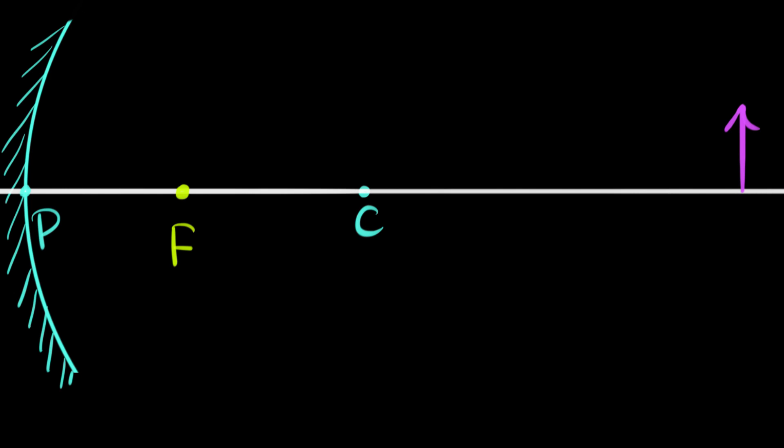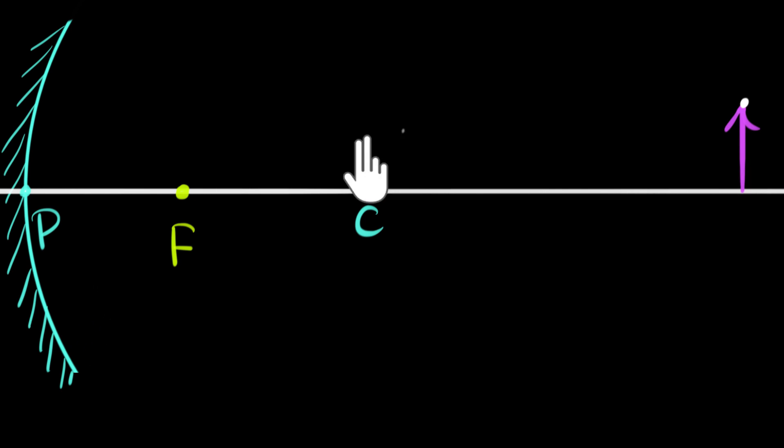To figure out where the image is going to be, all we have to do is pick a point on this object — let's pick the topmost point — and draw a bunch of rays of light from it that hit the mirror, to see what happens to them after reflection. This point is emanating rays of light in all directions. If we take any random ray, it becomes difficult to trace it.